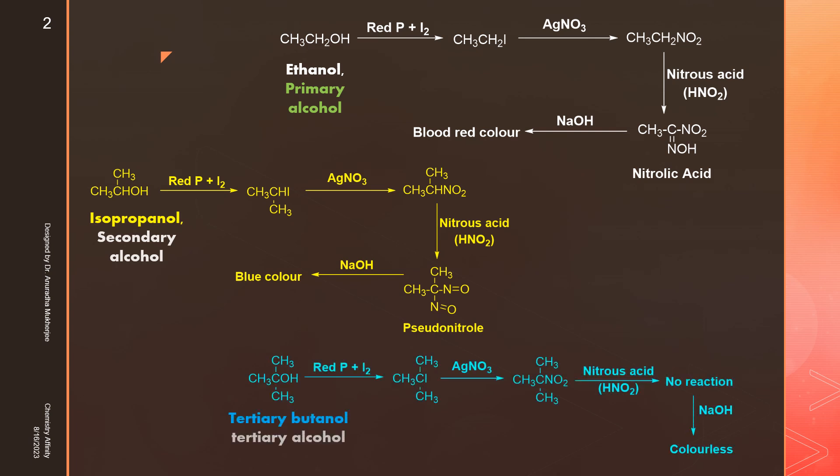Tertiary alcohol reacts with red phosphorus iodine. Tertiary iodide forms and reacting with silver nitrate we get nitroalkane, but tertiary nitroalkane cannot react with nitrous acid. So we do not get any product, and that is the reason if we add sodium hydroxide we can't see any coloration.